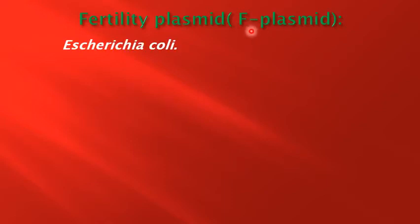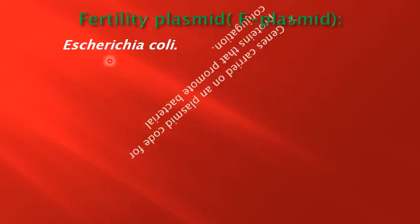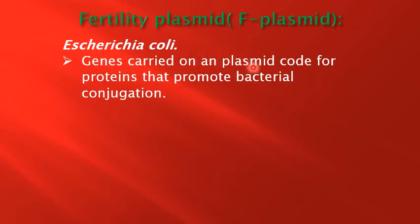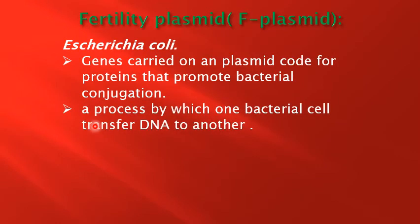There are two types of plasmid: F-plasmid and R-plasmid. The F-plasmid, found in E. coli bacteria, codes for proteins that promote bacterial conjugation — the process by which one bacterial cell transfers DNA to another. This is called the F-plasmid or Fertility Plasmid, and E. coli is a bacterium living in the human body.